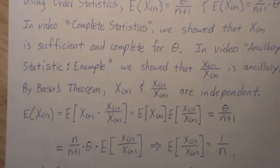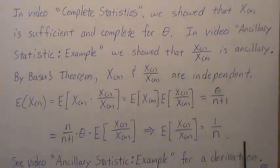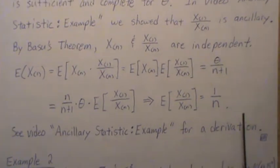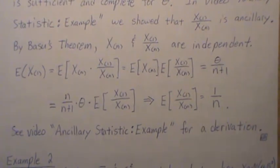If we divide this that implies the expected value of this ratio is 1 over n. Now that's a quick derivation using Basu's theorem. For a full derivation of this expected value you can go to my video ancillary statistic example and we derive it in more detail.